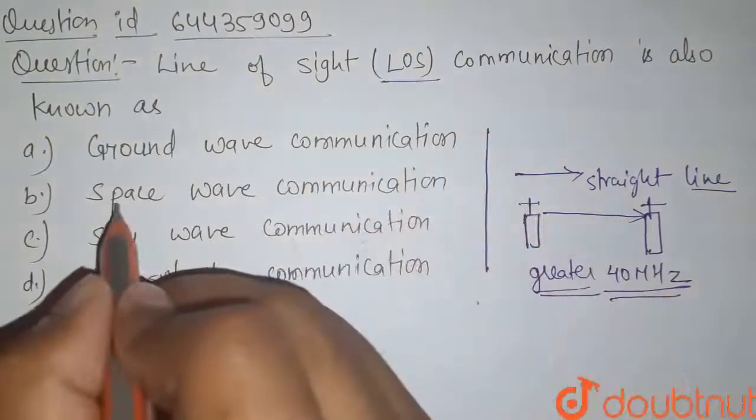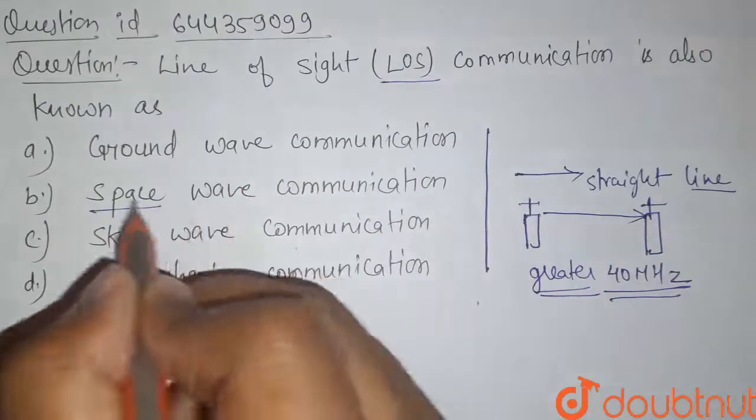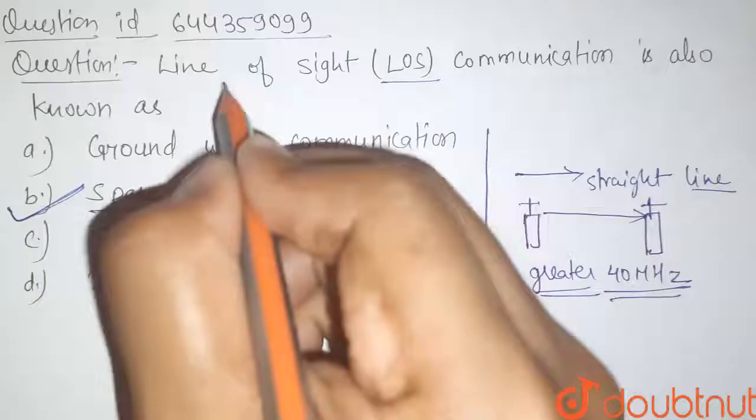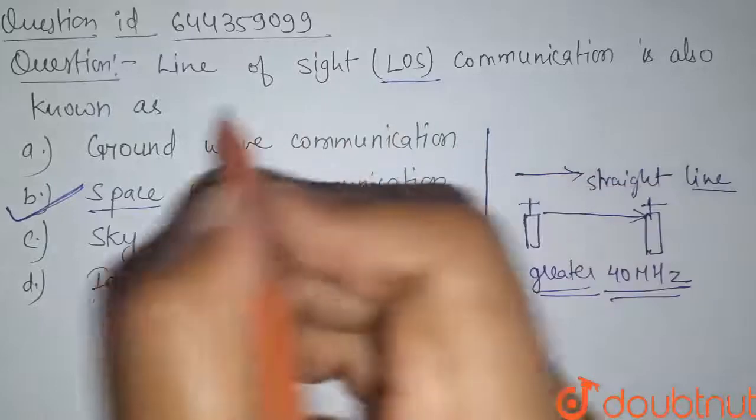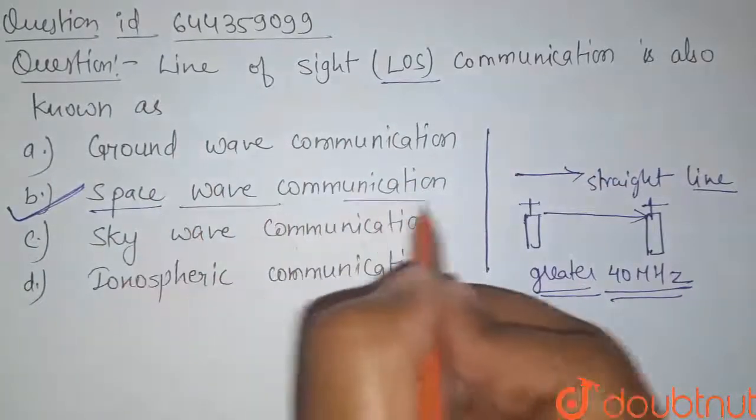So here the most appropriate answer for this question should be space wave communication. That means line of sight communication is also known as space wave communication.